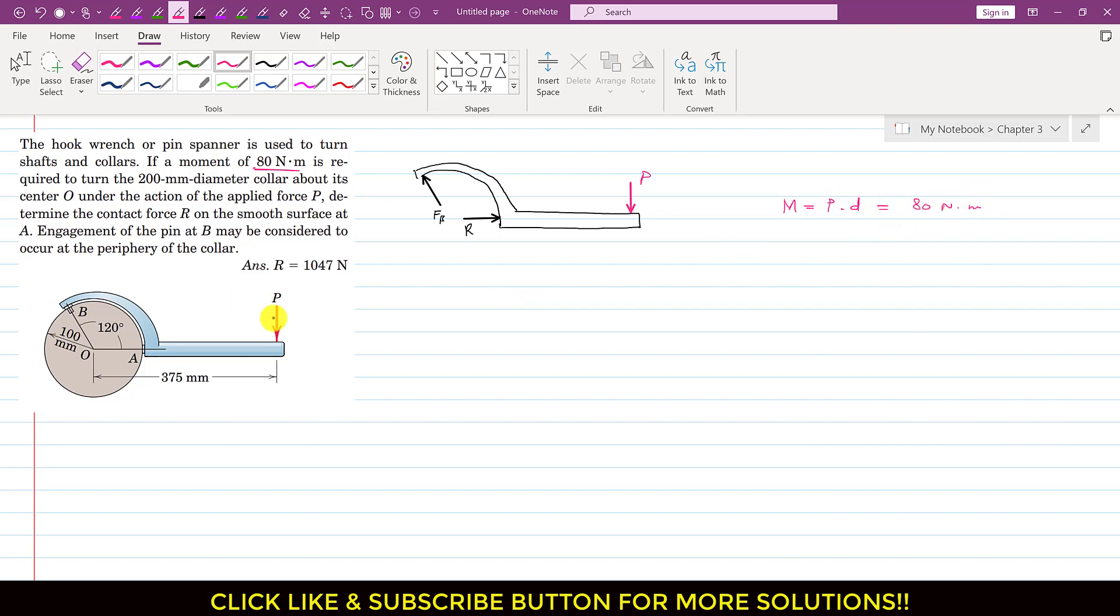The distance of this P from point O is 375mm. So we will write that P equals 80 divided by D. Since this moment is in Newton meter, this D needs to be in meters as well. So D equals 375mm. If you want to convert this into meters, we divide by 1000. So this equals 0.375 meters.